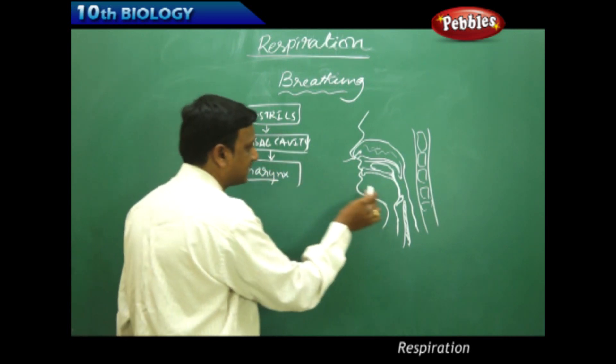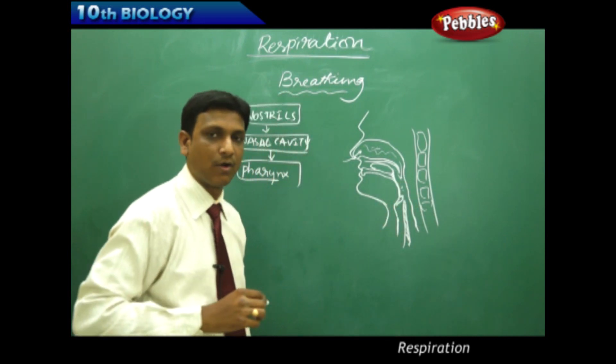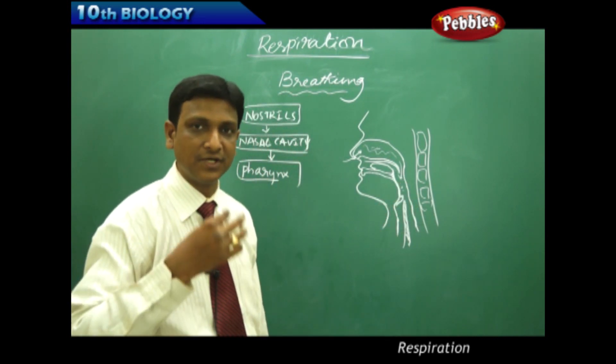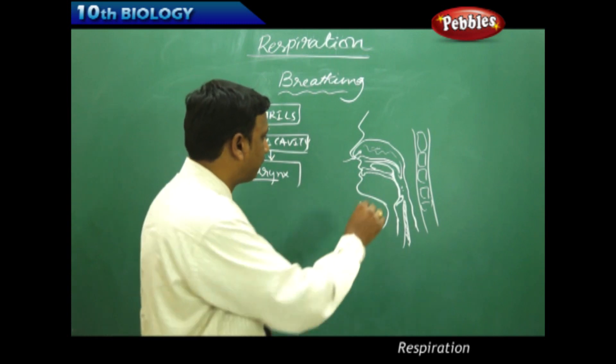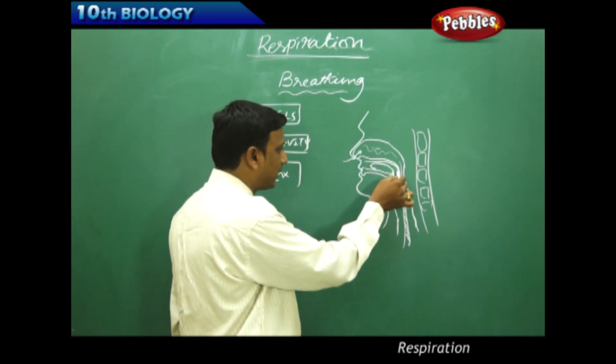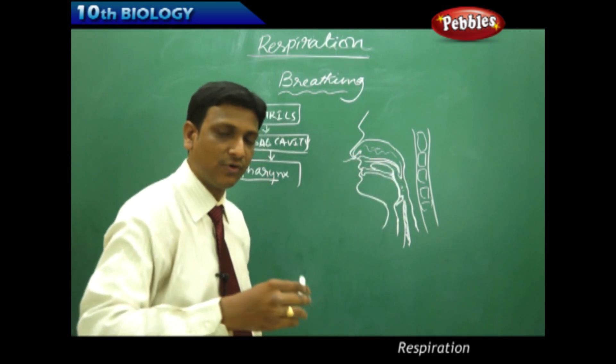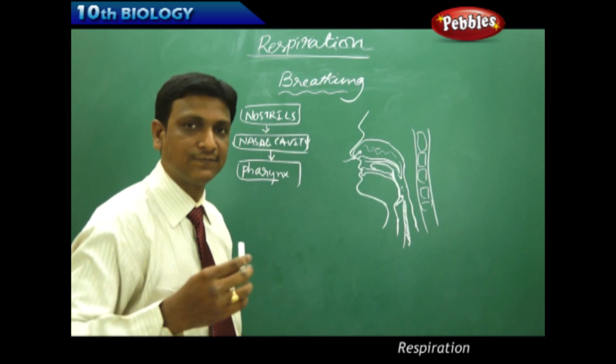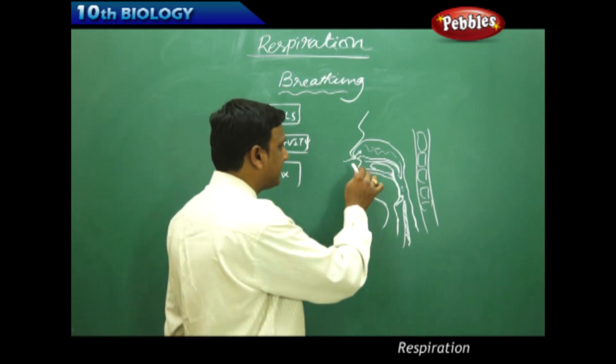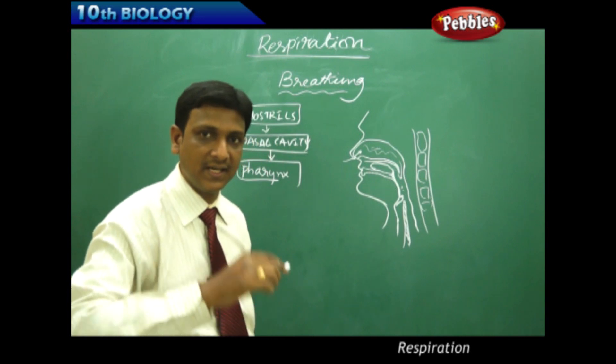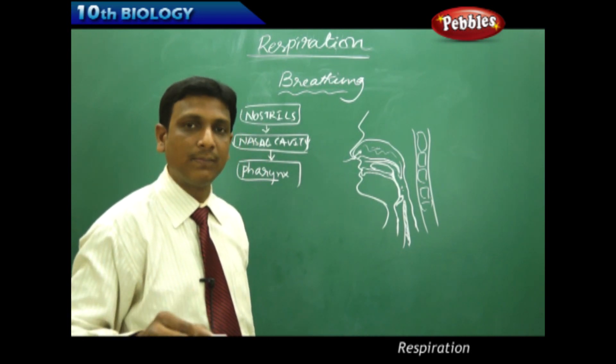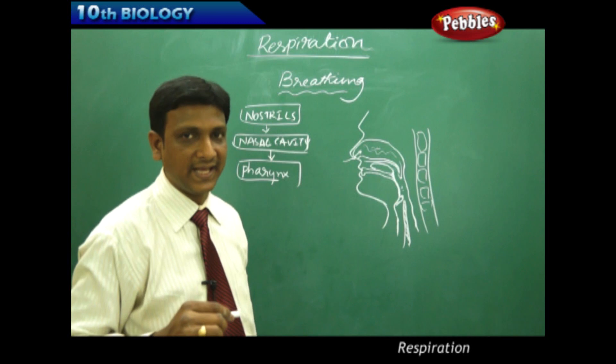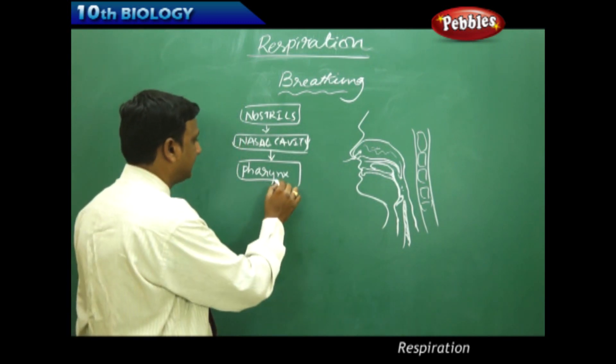Pharynx is a common chamber for the entry of air as well as food. The food that is chewed in the mouth is swallowed and it enters the pharynx before it goes to the esophagus. Esophagus is food pipe. In the same way, the air we breathe into the nasal cavity is passed to the pharynx. So pharynx is a common passage for both food and air.